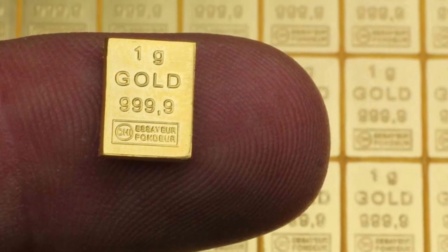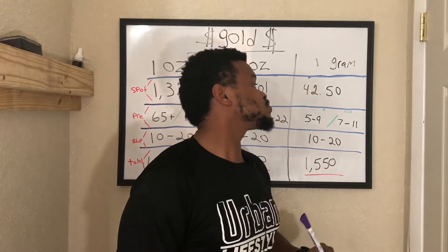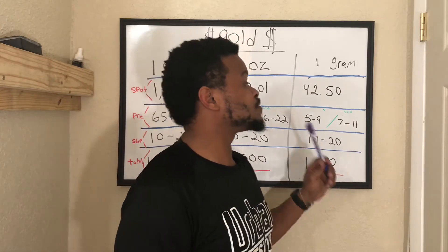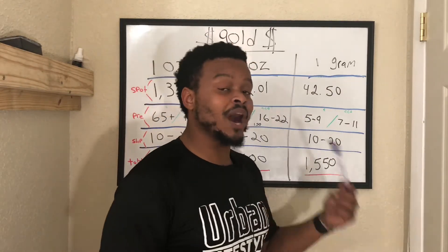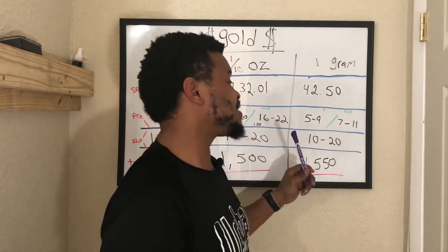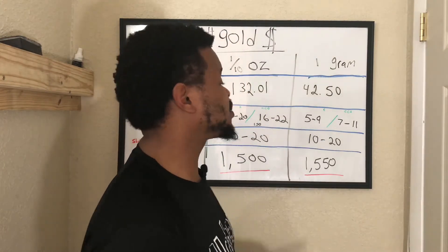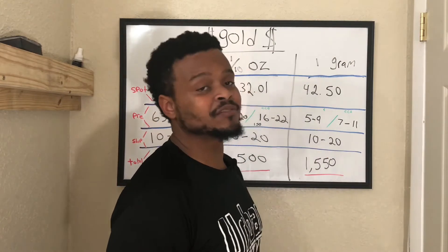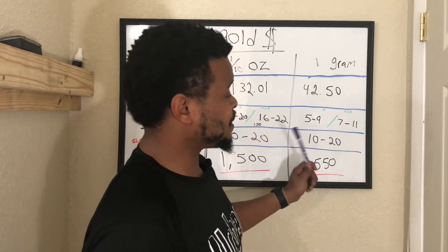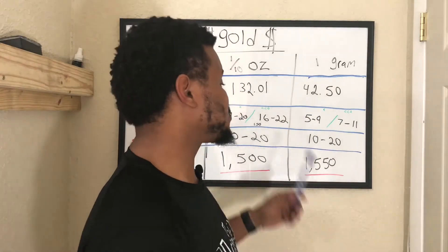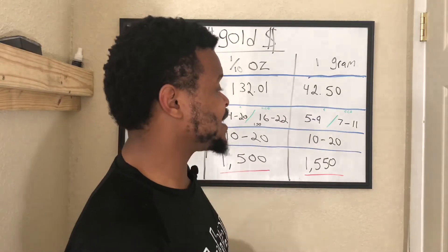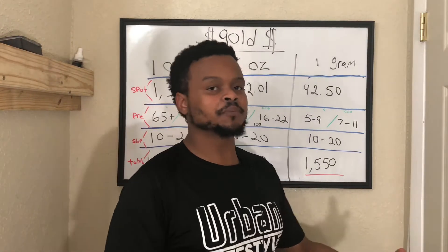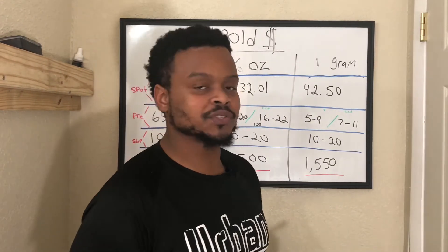For one gram of gold, the spot price is actually $42.50. If you're paying by wire or check, it charges between $5 to $9. If you're paying by card, they'll charge between $7 to $11. I have paid shipping on this because there are times where I only bought one gram. If you buy two of them they won't charge you shipping, at least at the company I've been using, which is Atmex.